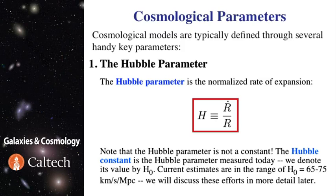It is defined as the ratio of the time derivative of the scale factor by the scale factor itself, the normalized slope of r of t curve.